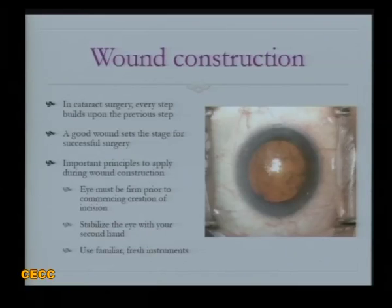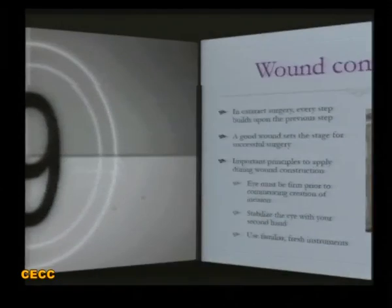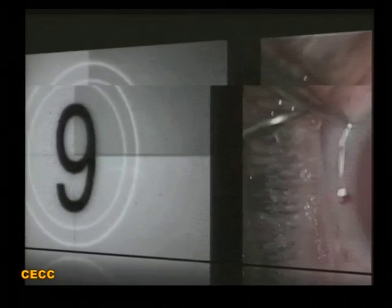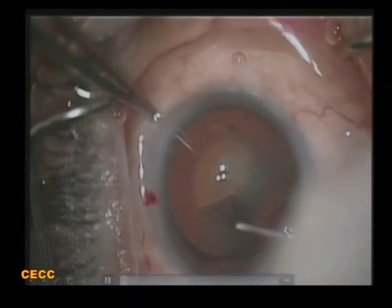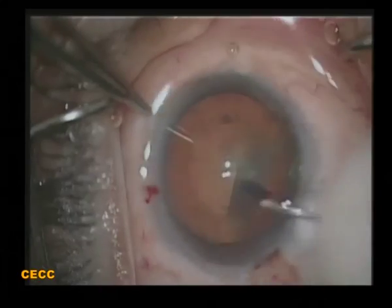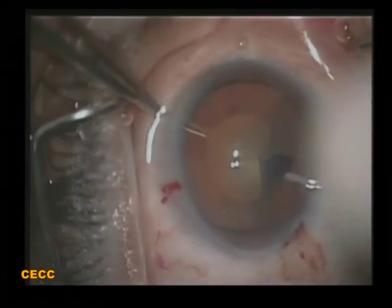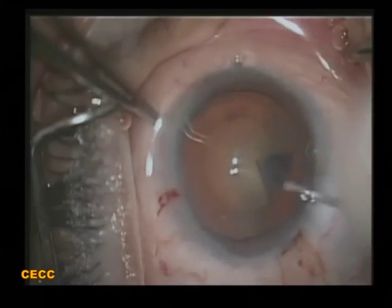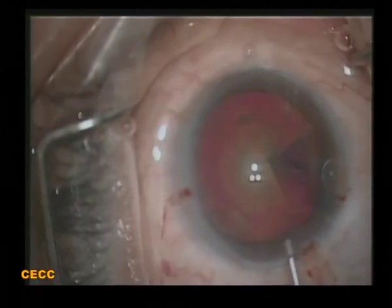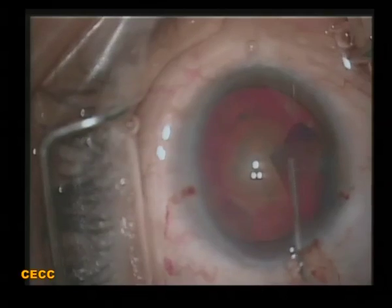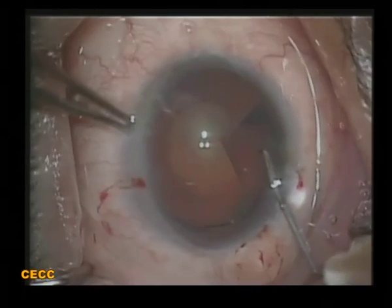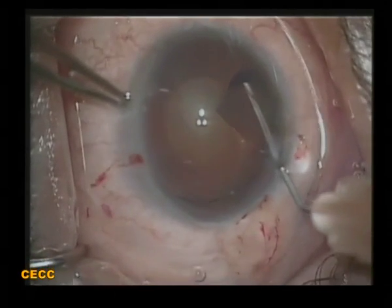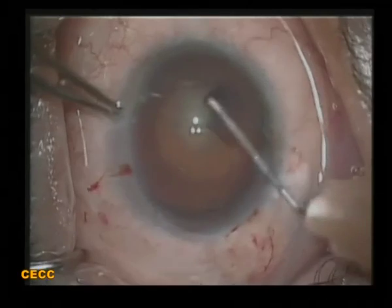This is the mistake I have seen done the most number of times by young ophthalmologists, and it sets up a bad case henceforth. In the second case — a grade 4 cataract — we stained the anterior capsule and are trying to do the capsulorrhexis using a cystotome, changing direction each time. The chamber becomes slightly shallow, we refill with viscoelastic, but the rhexis flap has not been turned back onto itself and the rhexis starts going outwards.